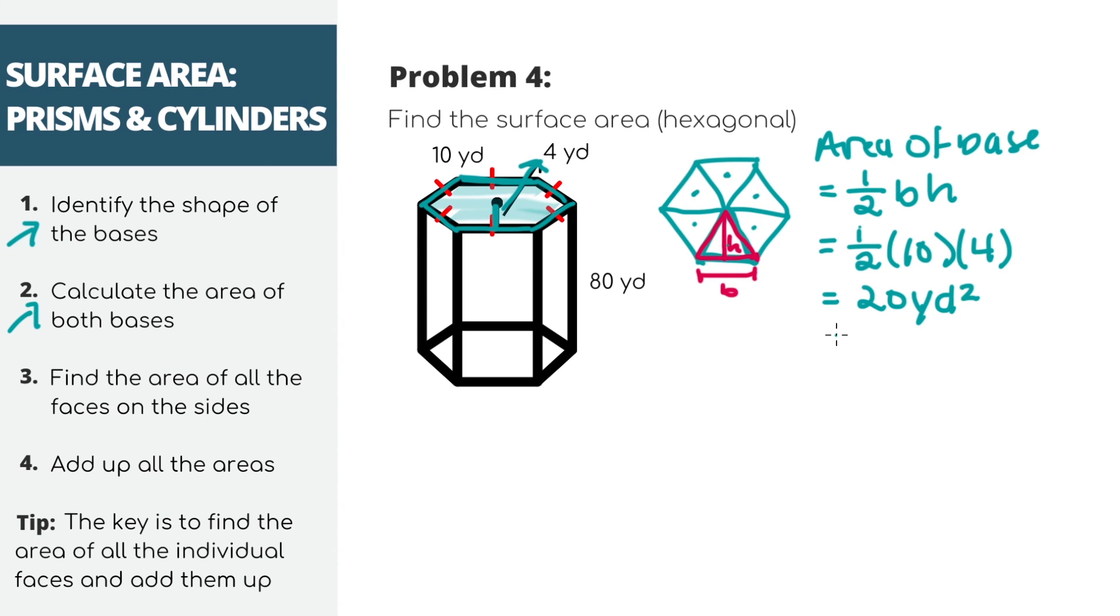Then, because there's 6 of these little triangles in a hexagon, let's multiply it by 6. And we'll get the total area of this one hexagon is 120 yards squared. But because there are two bases, one at the top, one at the bottom, let's multiply by 2. And we'll get an area of 240 yards squared for both of our bases.